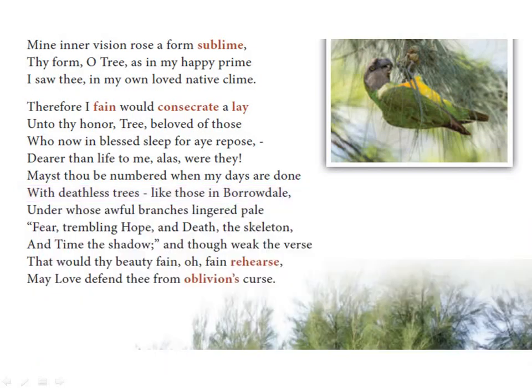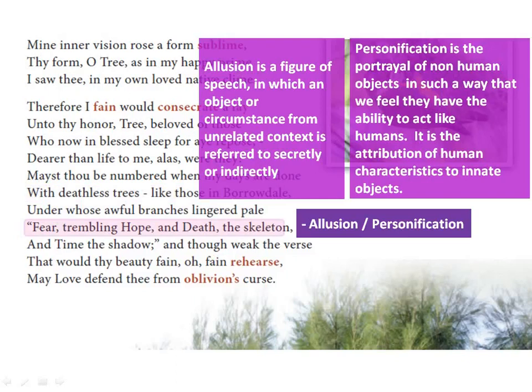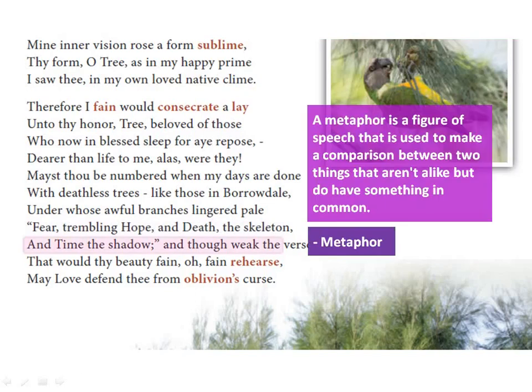'Fear, trembling, hope and death the skeleton and time the shadow' — the figure of speech is allusion because this line is taken directly from Wordsworth's poem. Also in this line, Fear, Hope, Death, and Time are personified — all these words are written using capital letters, their first letters capitalised like the names of human beings, hence personification. And 'time the shadow' uses metaphor — time is compared to a shadow.